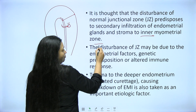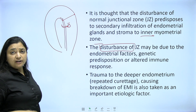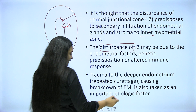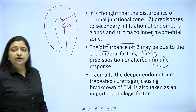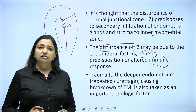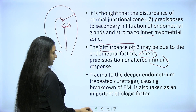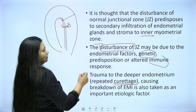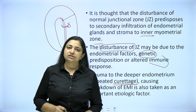The disturbance of the junctional zone may be due to endometrial factors — probably multiple childbirths causing some problem with the endometrium. Genetic predisposition also plays a role, as does altered immune response. We actually don't know what happens, but something happens with the junctional zone and the endometrium moves inside. Trauma to the deeper endometrium, mostly in cases of repeated curettage causing breakdown of the interface, is also considered an etiological factor.